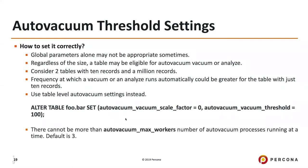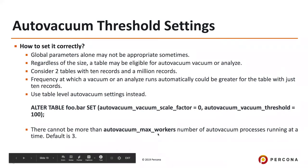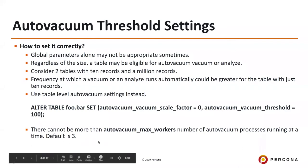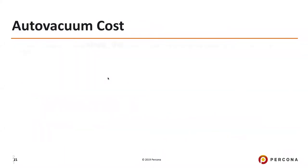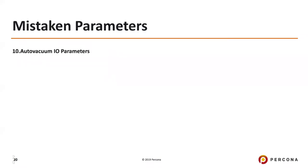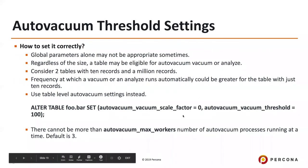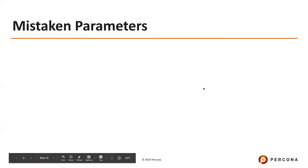How many autovacuums can run at the same time? It depends on autovacuum_max_workers — set to 3 by default. There cannot be more than that many autovacuums running by default. Now let's talk about autovacuum IO parameters in more detail.